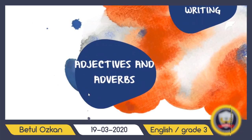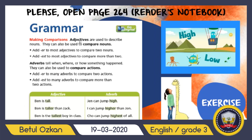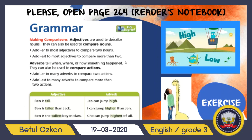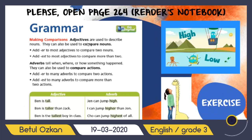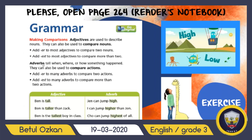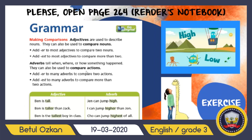While comparing two actions or more than two actions, adjectives are used to describe nouns and can also be used to compare nouns. While comparing two things, we add -er at the end of the adjective or adverb. While comparing more than two things, we add -est at the end of the adjective or adverb.